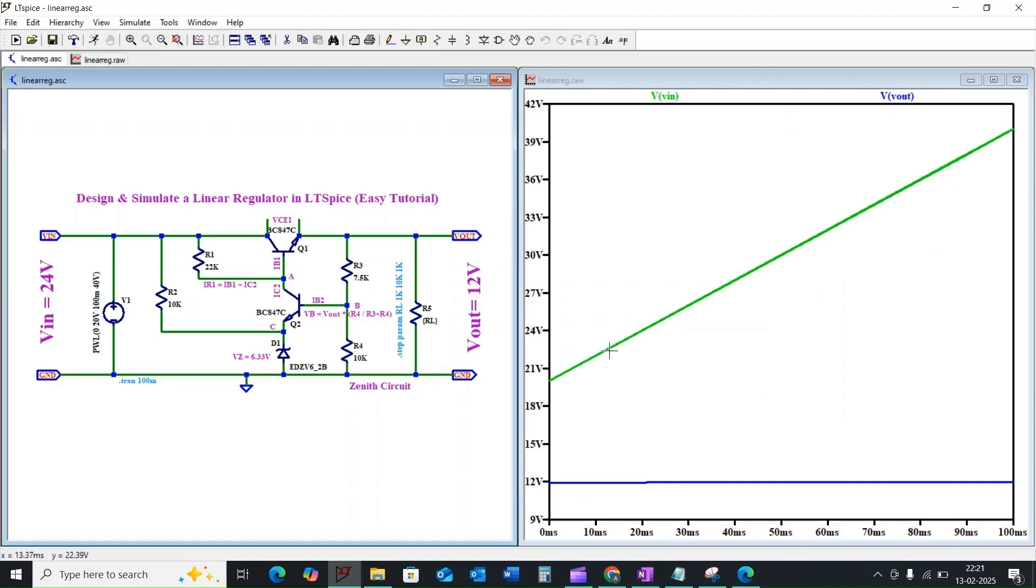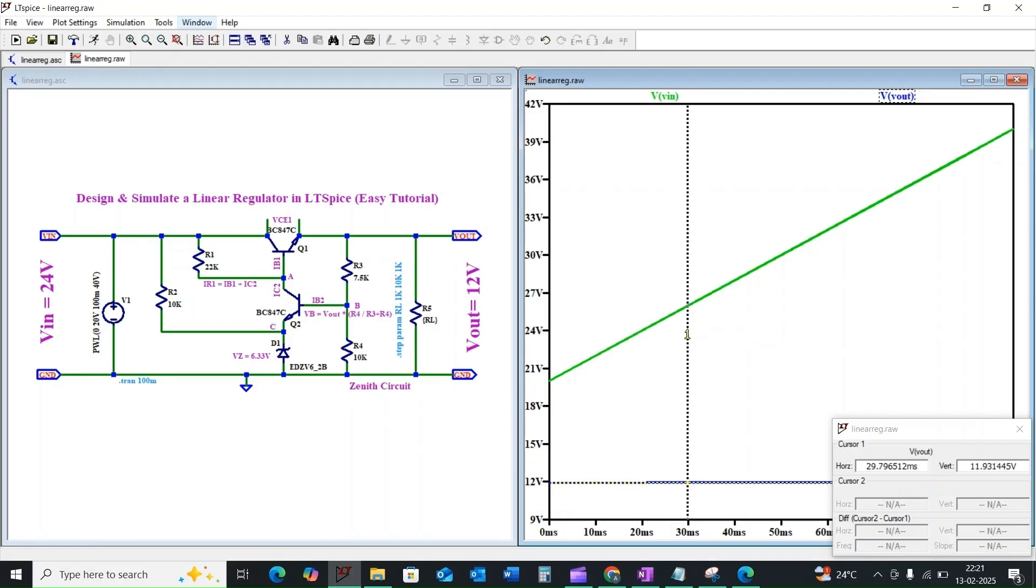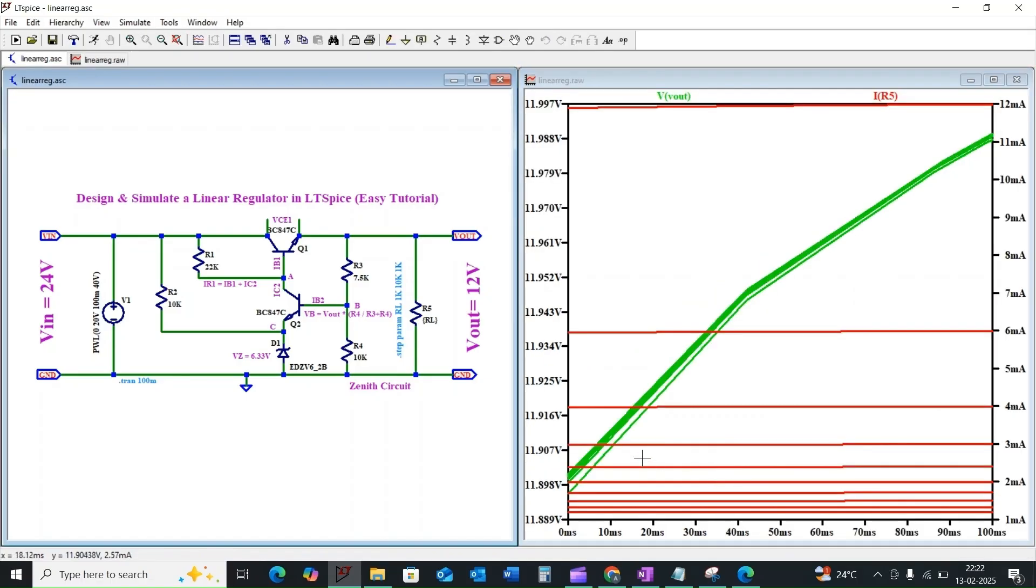As you see here, even when the input voltage jumps from 20 volt to 40 volt, the output voltage remains remarkably constant at around 12 volt. This demonstrates excellent line regulation. Now let's look at the effect of changing the load. Even with significant change in the load resistance, the output voltage varies slightly from 11.89 to 11.9... and it also shows good regulation.